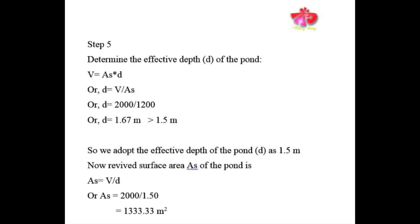In Step 5, we determine the effective depth of the pond using: V = surface area × effective depth. Rearranging: d = V / surface area = 2000 / 1200 = 1.67 meters.